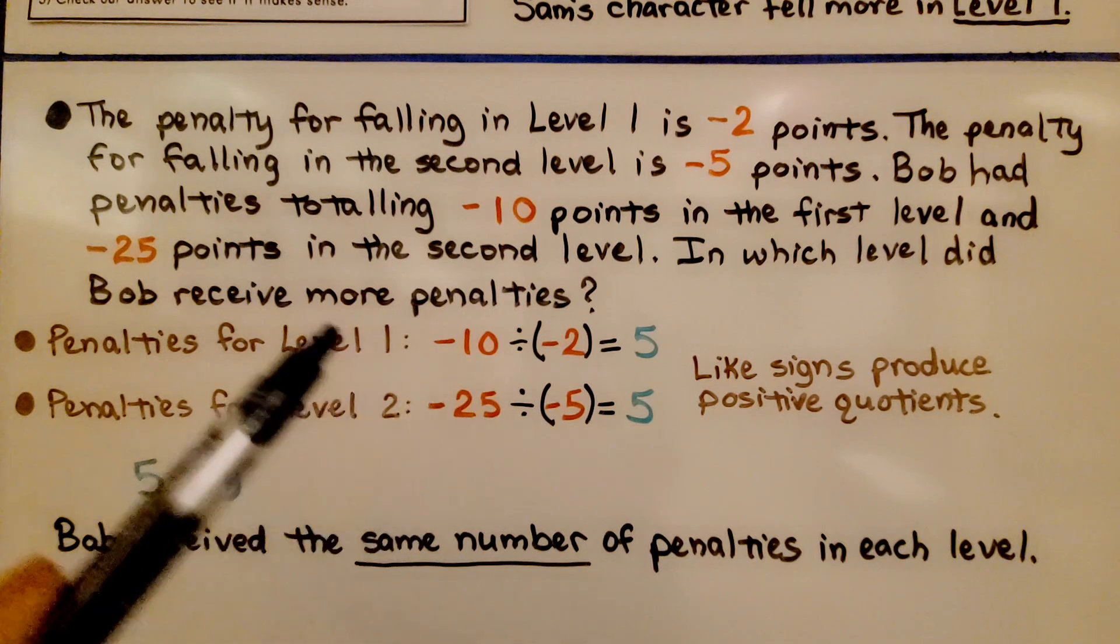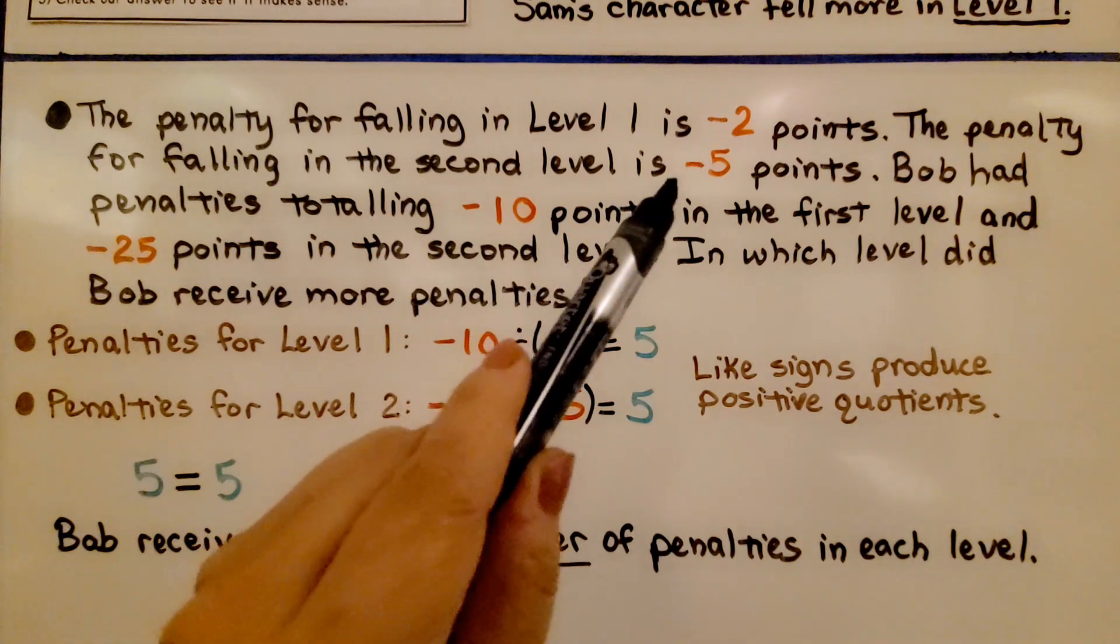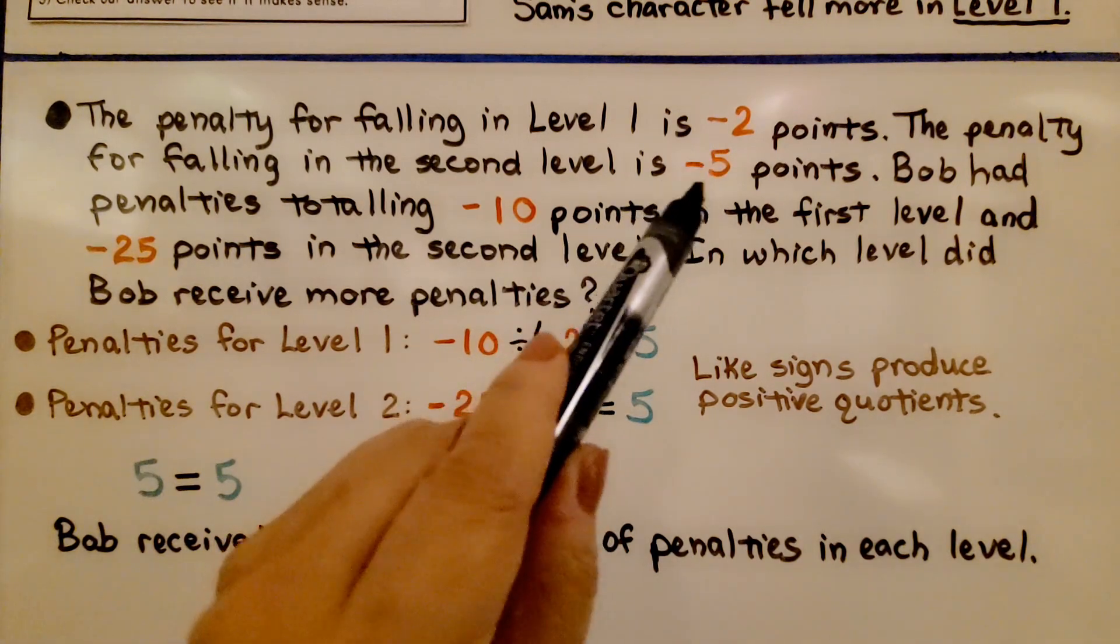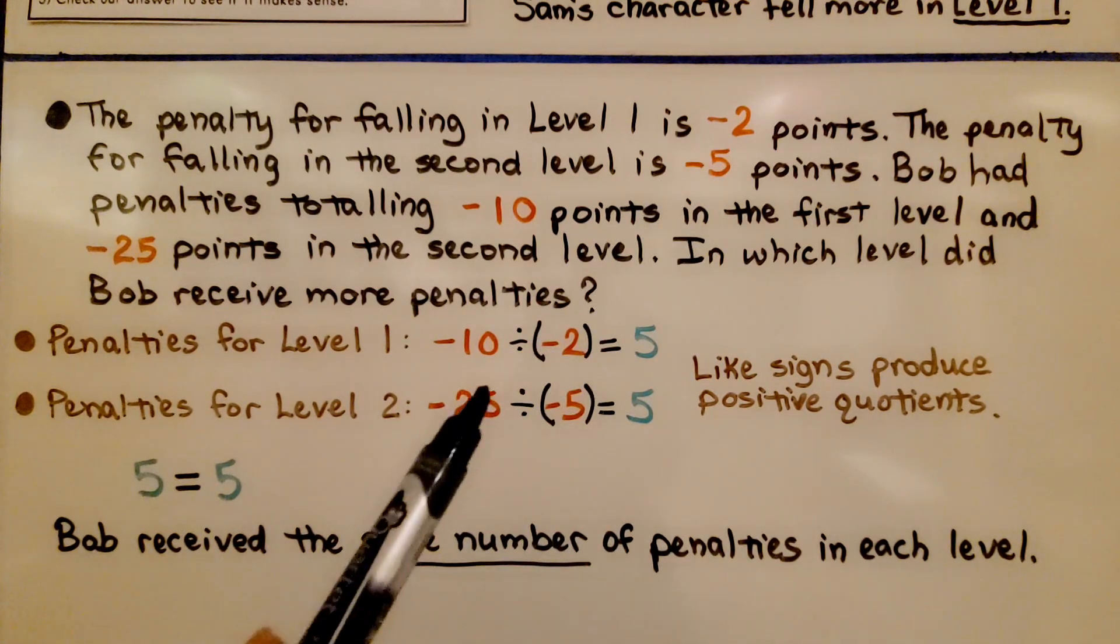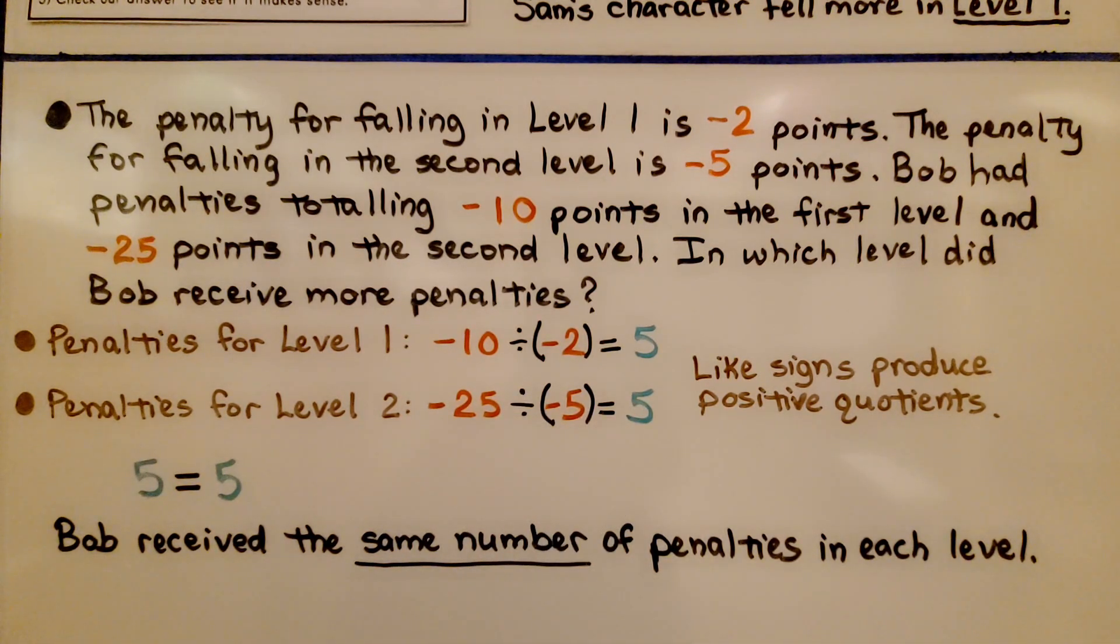For level 2, he's got negative 25 points. And they're each taking away 5 points. That's a negative 5. We have like signs. So it's going to produce a positive quotient. And 25 divided by 5 is 5. It's a positive 5.